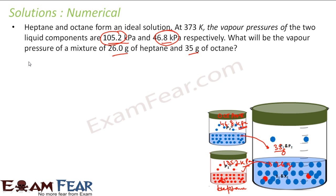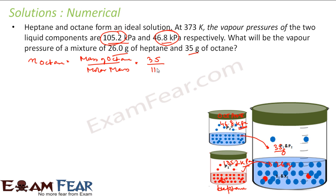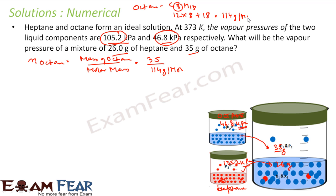We need the mole fraction, so let's find the moles of octane. Moles of octane equals mass of octane divided by molar mass of octane. Mass of octane is 35 grams. Octane is C8H18, so the molar mass is 12×8 + 18 = 114 grams per mole. Solving this gives 0.31 moles of octane.